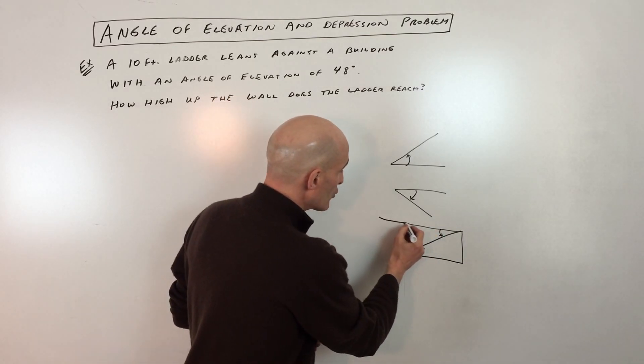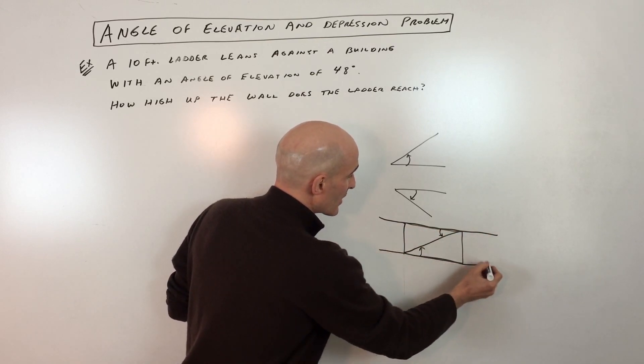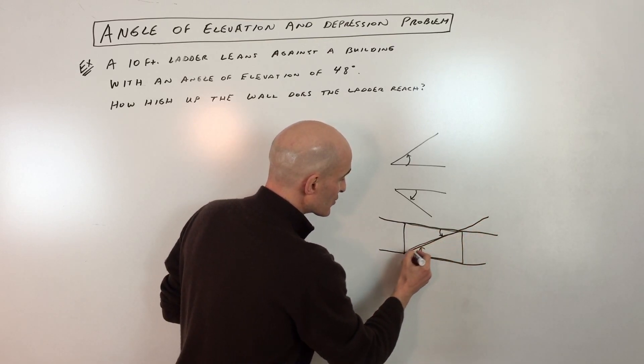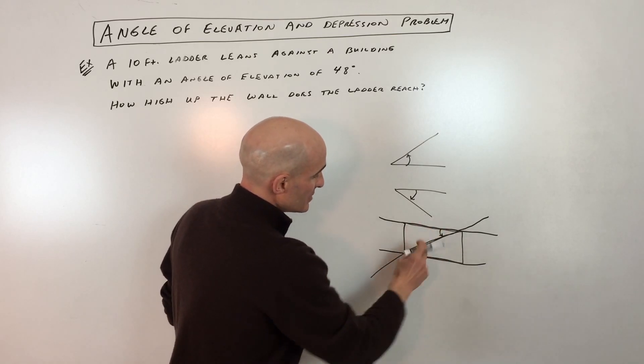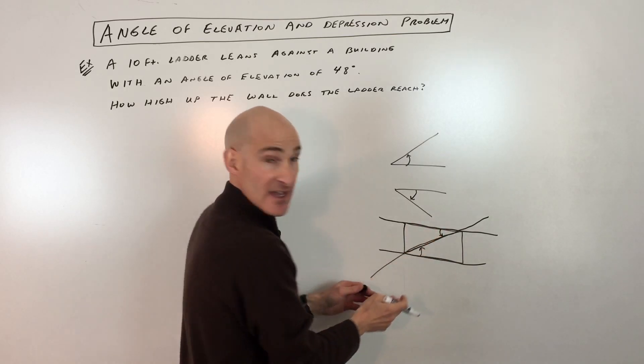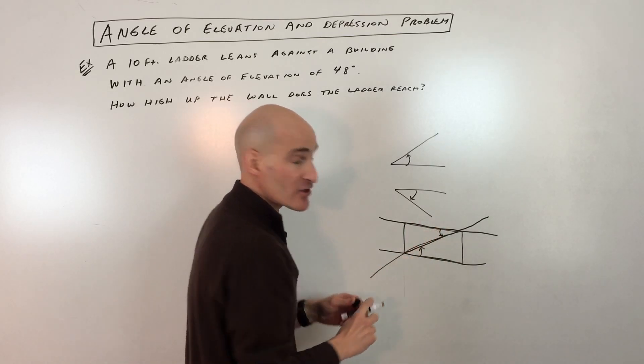So if you remember when you learned about parallel lines cut by a transversal, see this third line, it cuts across. These are interior ones on the right, ones on the left side of the transversal. Those are alternate interior, they're congruent.